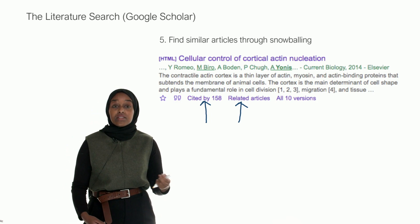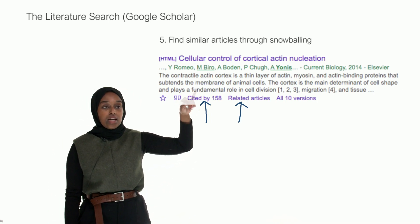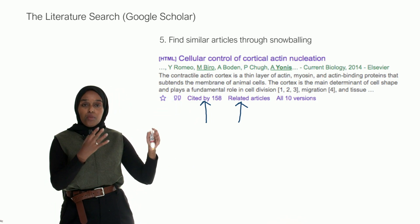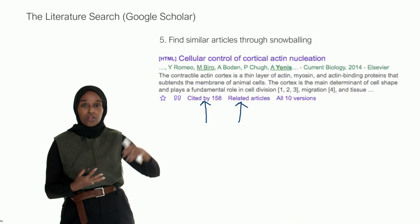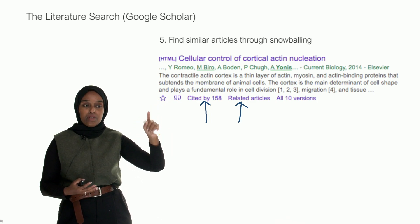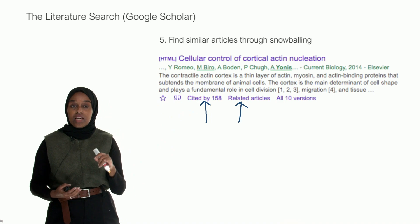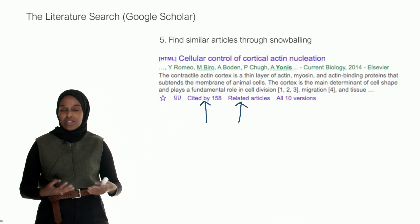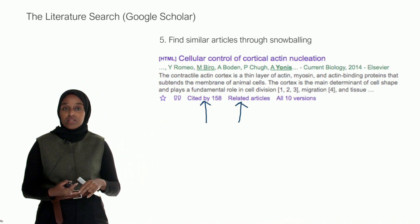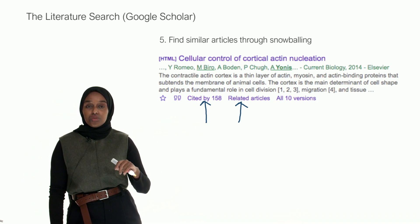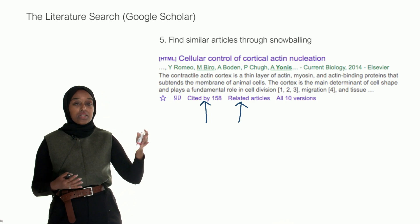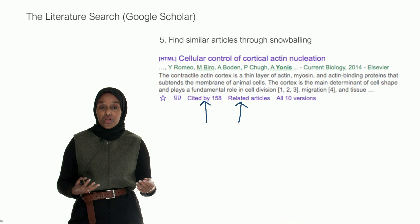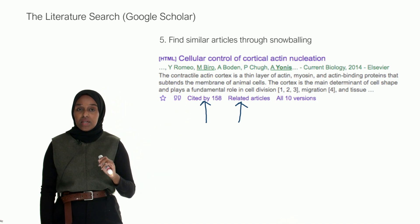Cited By shows you how many papers have cited this paper. So how many other papers after this one have mentioned and referenced this paper. In this case, there's 158 that have referenced it since 2014. So can you see how much research has been done in just the past six years?